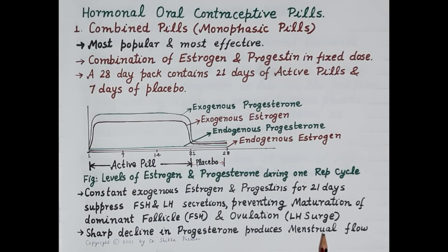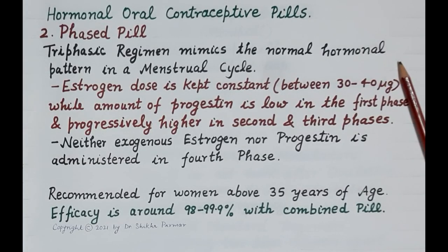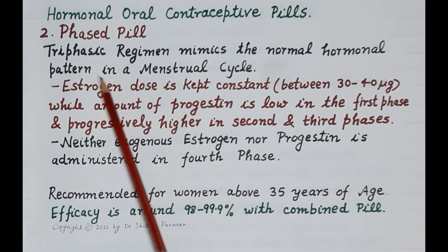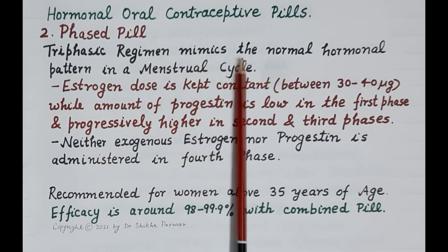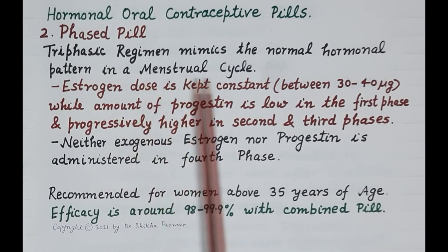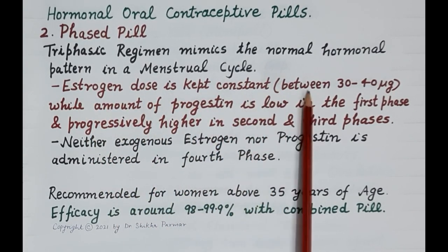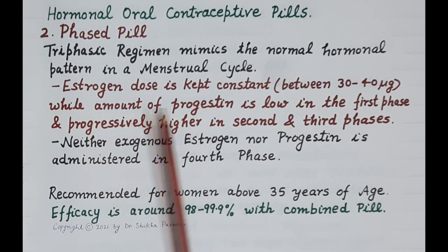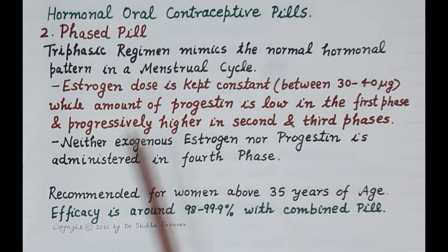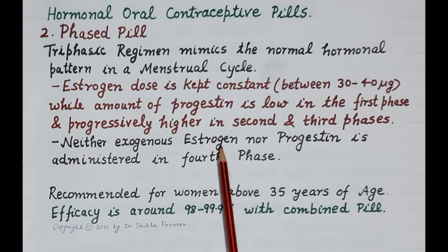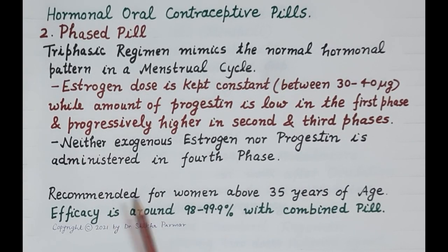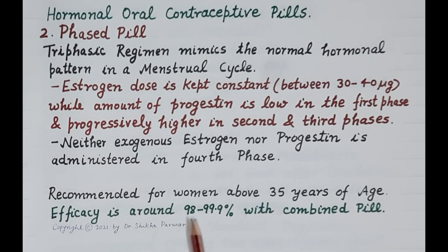The second type are phased pills, which follow a triphasic regimen mimicking the normal hormonal pattern of a menstrual cycle. Estrogen dose is kept constant between 30 to 40 micrograms, while the amount of progesterone is low in the first phase and progressively higher in the second and third phase. Neither exogenous estrogen nor progesterone is administered in the fourth phase. These are recommended for women above 35 years of age, with efficacy around 98 to 99 percent.